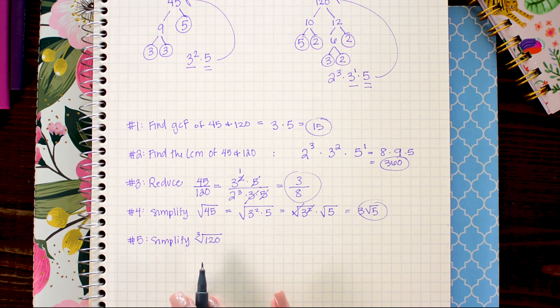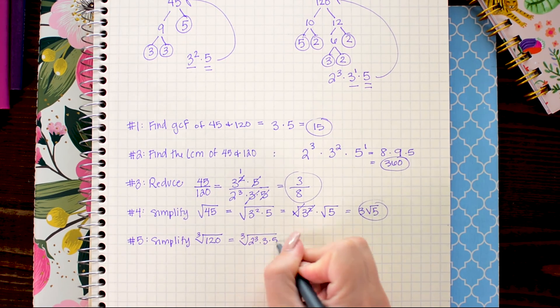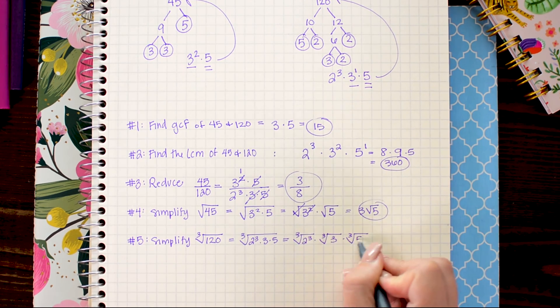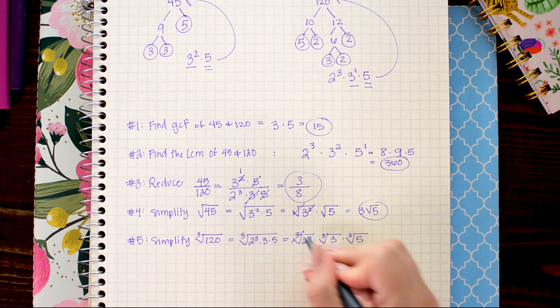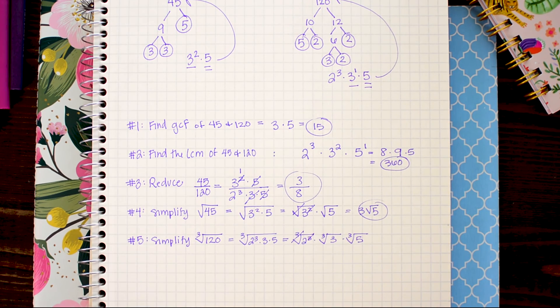Just like square roots we can also reduce cube roots or higher order indexed roots. I'm going to do the exact same process here. And then I'm going to split this into separate roots. That allows me to cancel out the cube root with the cube on the 2.